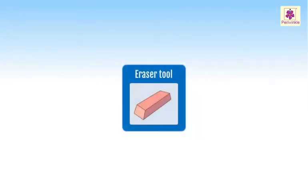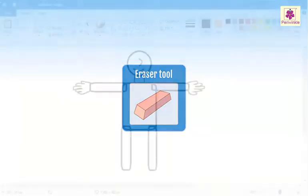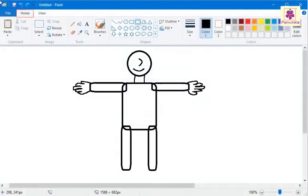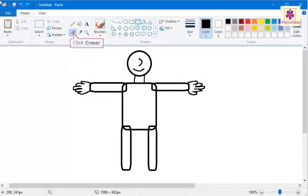In MS Paint, we use the Eraser tool to remove any unwanted objects from the drawing area. On the Home tab, from the Tools group, click on the Eraser icon.